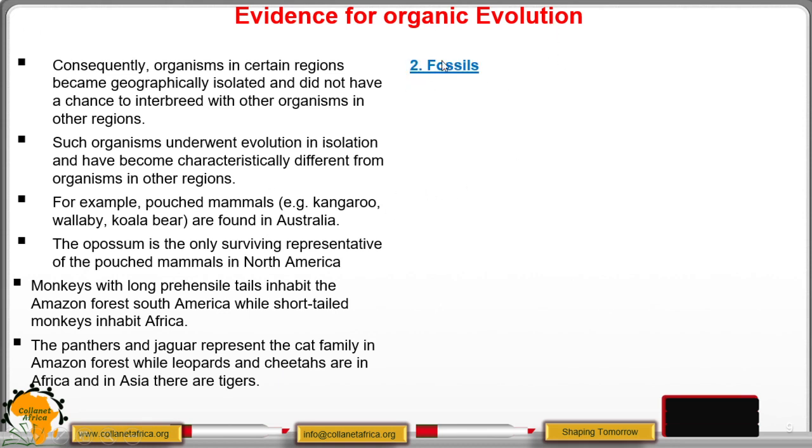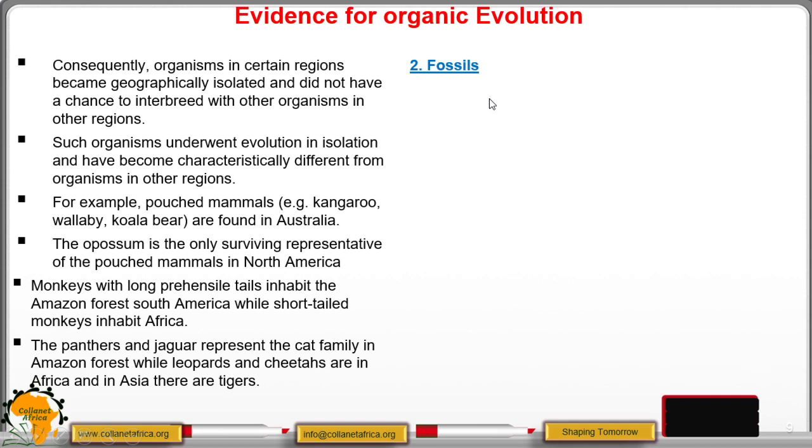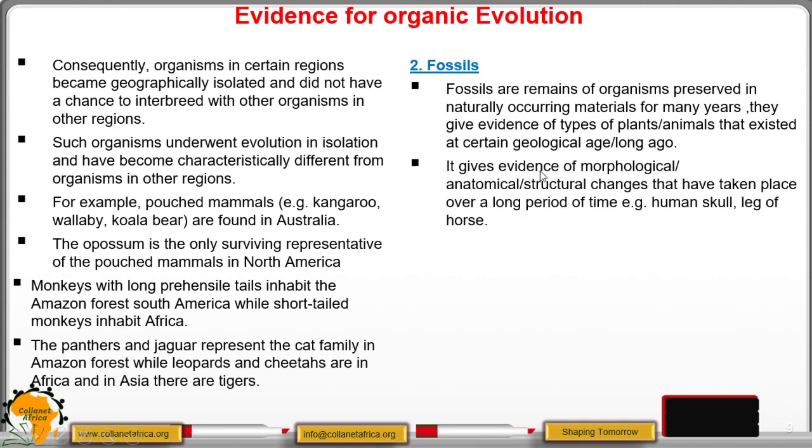Another evidence for organic evolution is fossil records. Fossils are remains of organisms preserved accidentally in naturally occurring materials for several years. And they give proof of the type of plant or animal that existed at certain geological period. It also gives evidence of the morphological or rather anatomical structures that have taken place over a long period of time.